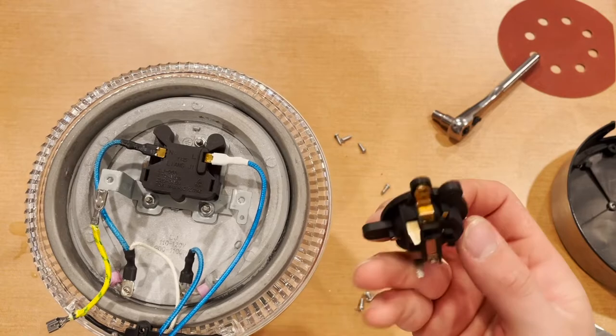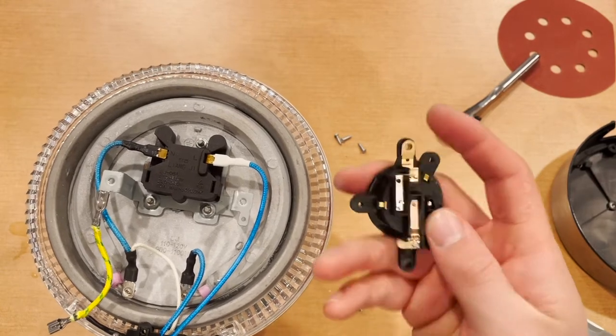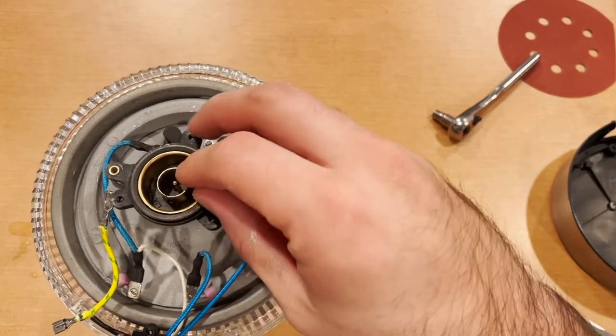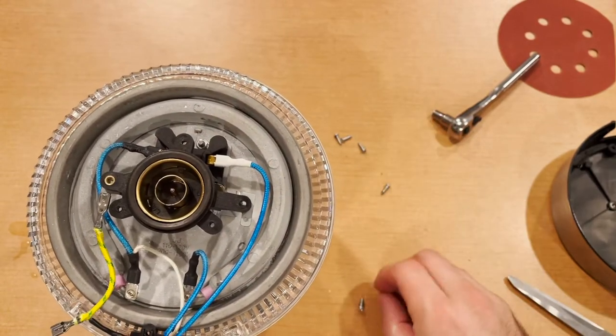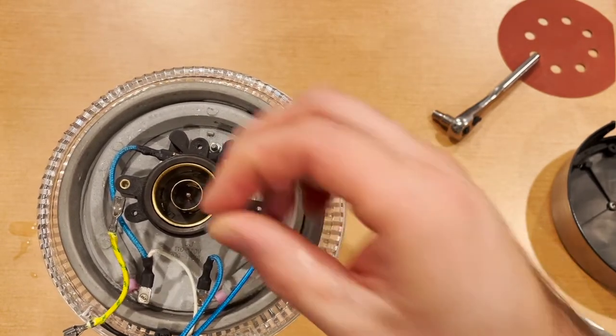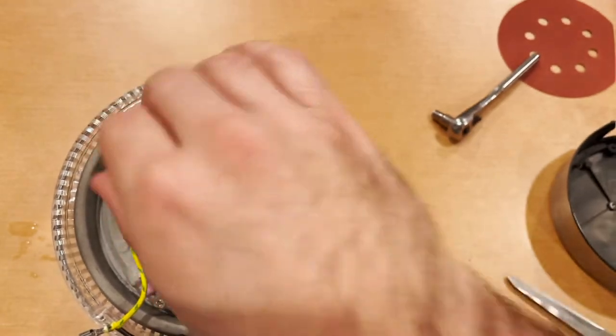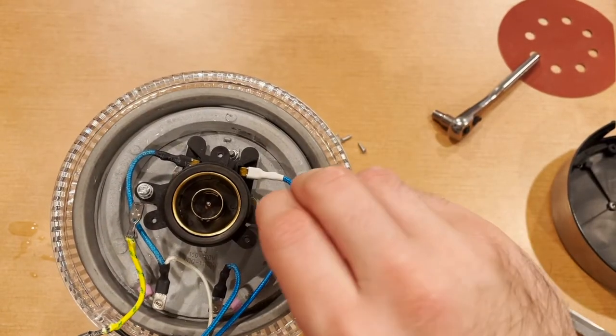We're going to go ahead and be putting this piece on. We're going to take the two prongs and slip them into the slots that are provided. Make sure that your holes line up so you can get your screws in there to hold them in place. So let's go ahead and put those on there.